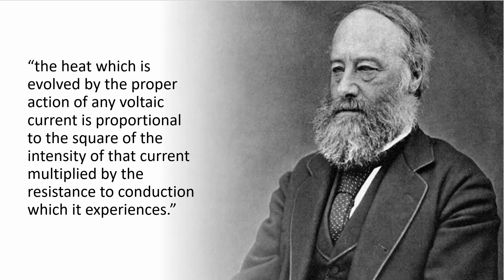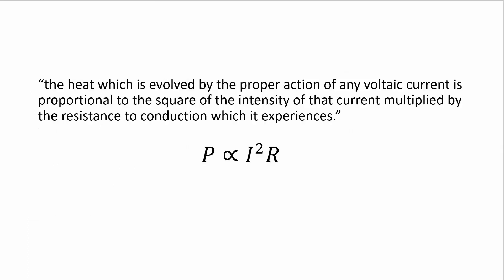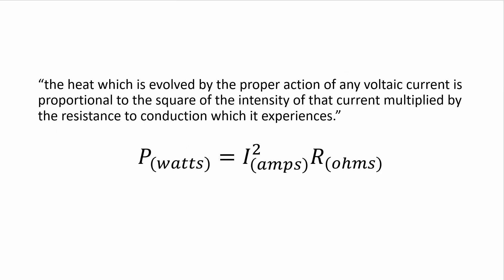In 1841, James Prescott Joule discovered that heat could be generated by a current. More specifically, he discovered that the heat evolved by any voltaic current is proportional to the square of the intensity of that current, multiplied by the resistance to conduction which it experiences. In other words, power is proportional to I squared times R. And because of the way we have defined units for power, current, and resistance, power in watts is equal to current in amps squared times resistance in ohms. This is known as Joule's Law or Joule's First Law.